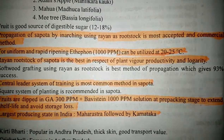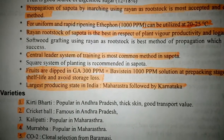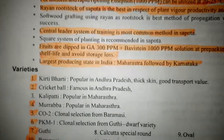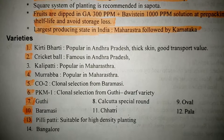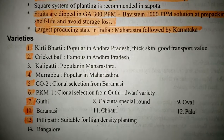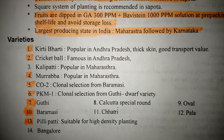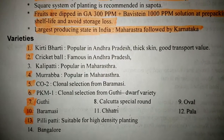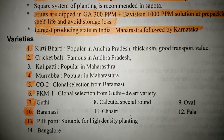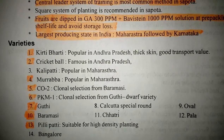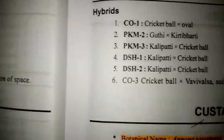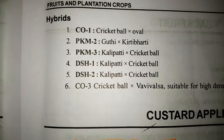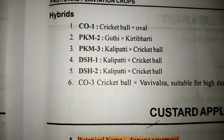Rajasthan's production state in India is Maharashtra followed by Karnataka. The most common varieties, which are mostly asked in exams, are Pirthi Bharti, popular in Andhra Pradesh, thick skin, good transport value; Cricket Ball, famous in Andhra Pradesh; and Murabha, popular in Maharashtra.